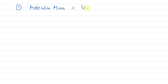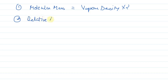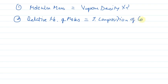We have been given the vapor density. The second formula we need to know is: molecular mass is equal to vapor density into 2, and relative number of moles is equal to percentage composition of the compound upon the molar mass. These are the two formulae we need, and on this basis we can tackle this question.